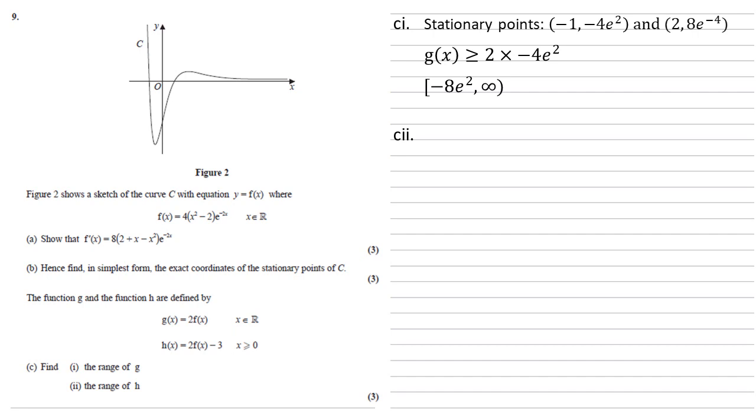Part two, we need to find the range of h. Now for h, x is larger than or equal to zero. So for that part, f of x would lie between f of zero and our other stationary point, the maximum at 8e to the minus 4.